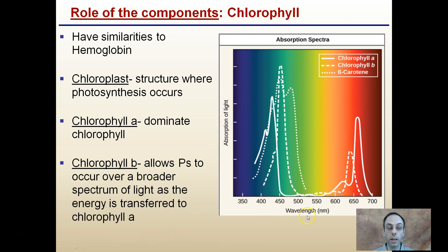Now, we talk about different wavelengths that are measured in nanometers. And this is showing the specific colors that chlorophyll A is able to absorb. Chlorophyll B allows the photosynthetic process to occur over a broader spectrum of light as energy is transferred to chlorophyll A.